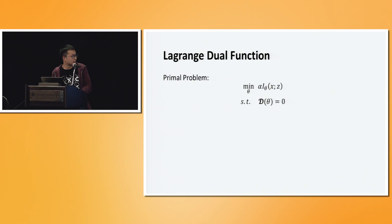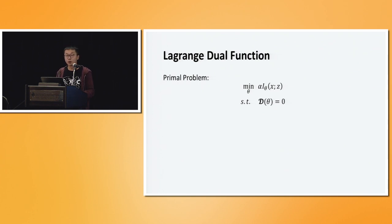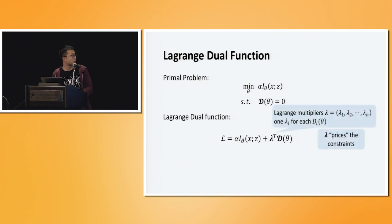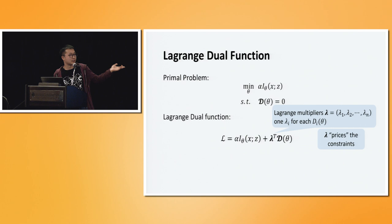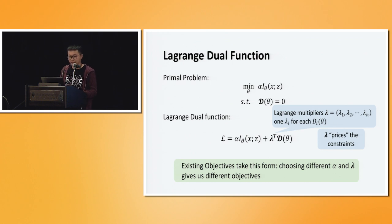We arrive finally at this primal problem: we try to minimize alpha times the mutual information, where alpha can be positive or negative depending on whether we want to maximize or minimize, subject to consistency constraints. This primal problem has this Lagrangian dual function, where we select a vector of Lagrange multipliers — one lambda for each of the divergences. Intuitively, lambda prices the different constraints: if we violate one of them, it becomes non-zero and lambda tells us how much that penalizes us. One of our major conclusions is that almost all existing objectives actually take this form, differing only in their choice of alpha and multipliers.